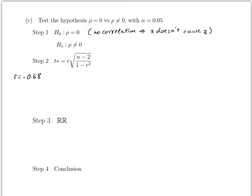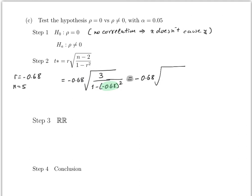The formula gives t* = r × sqrt(n−2) / sqrt(1 − r²). This is −0.68 × sqrt(3) / sqrt(1 − 0.68²). Be careful with order of operations — squaring always makes the value positive, so you always subtract. This works out to approximately −1.6.